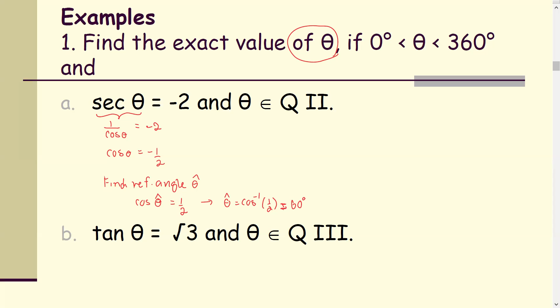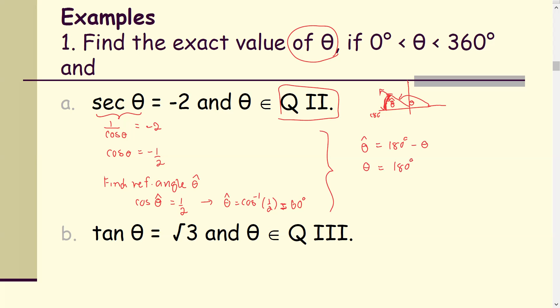You should get theta-hat as 60 degrees. Recall that theta-hat is always an acute angle, between 0 and 90 degrees. In quadrant 2, theta-hat is the difference between the terminal side and the closest x-axis, which is 180 degrees. Therefore, theta equals 180 degrees minus theta-hat, which gives us 180 minus 60 equals 120 degrees as the answer.